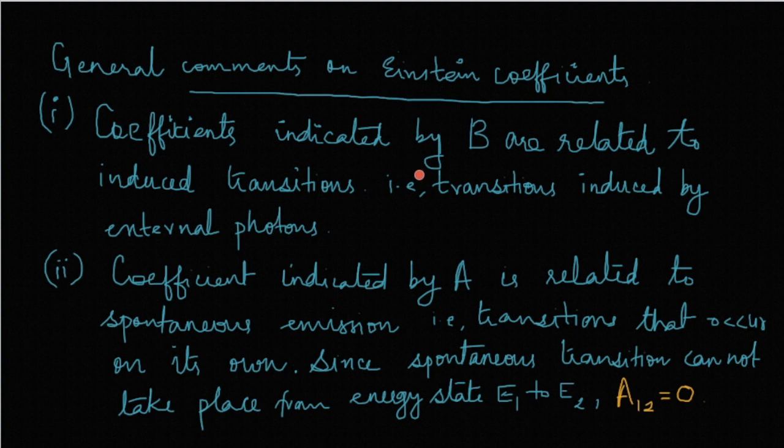And B21 denotes the transition induced by a photon from higher energy level E2 to the lower energy level E1.